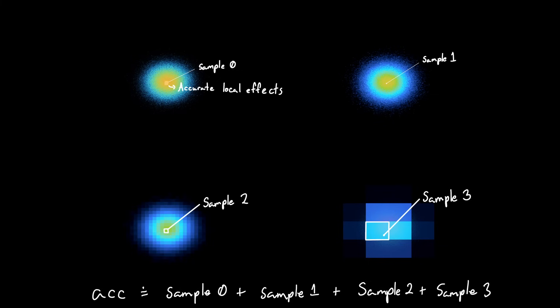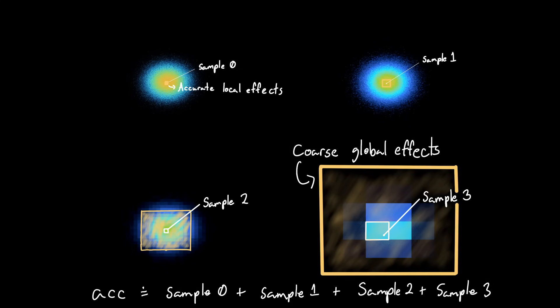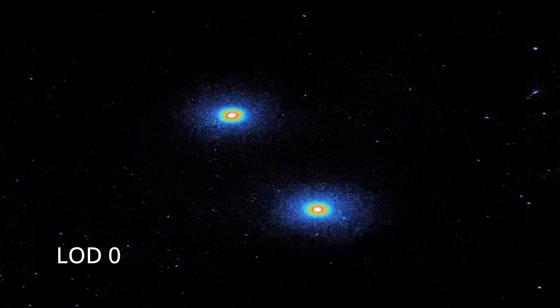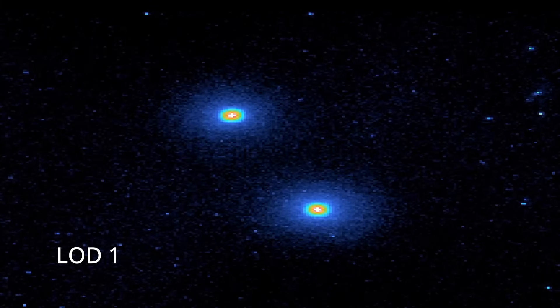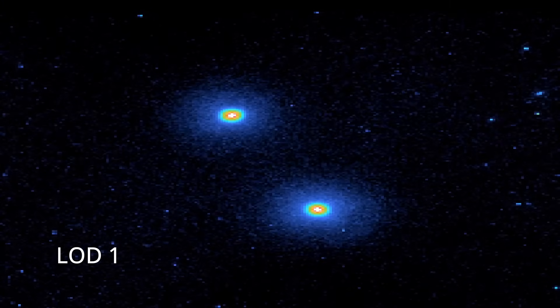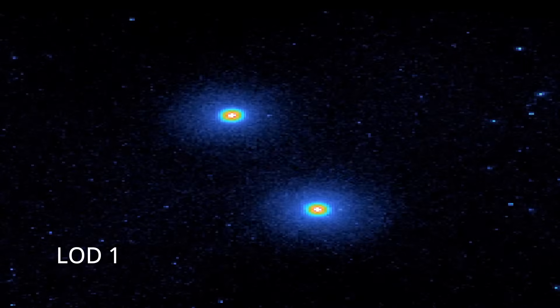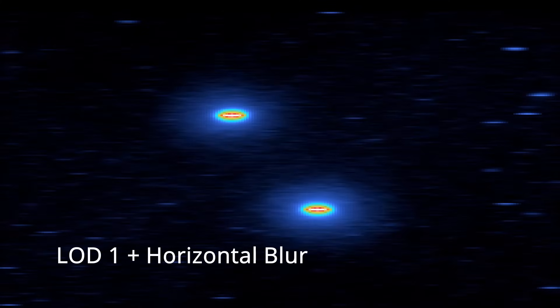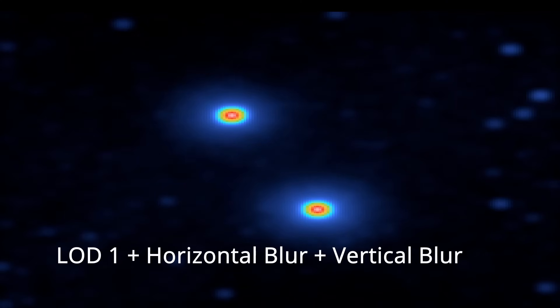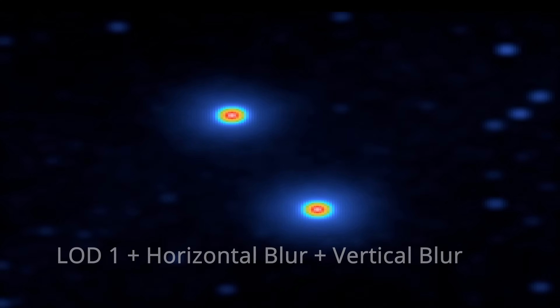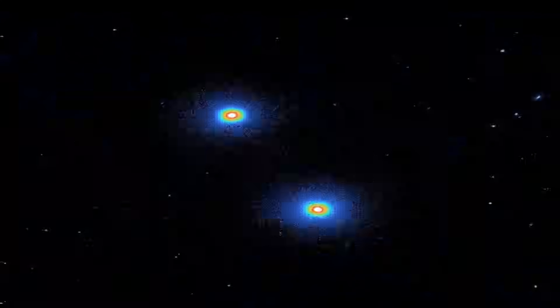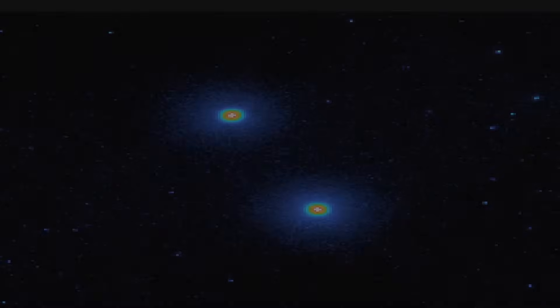This way I can get more accurate gravitational forces from nearby particles by using the higher resolution grid, but also not ignore the gravitational interactions between far away particles, albeit at a much coarser approximation. One thing I've been experimenting with is rather than calculate the force of the gravitational field for each grid cell, to instead apply a horizontal blur followed by a vertical blur to the accumulated mass field. This method requires only n plus n samples per grid cell, opposed to n squared samples.